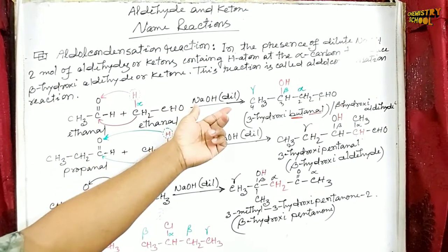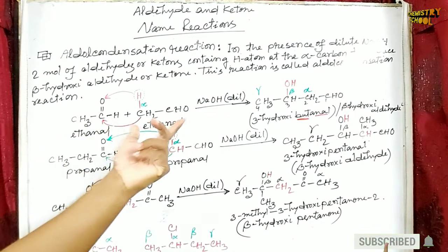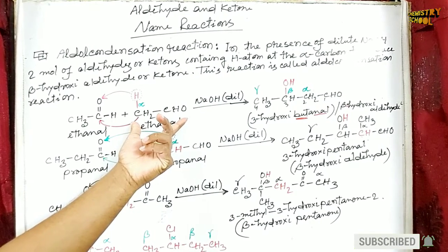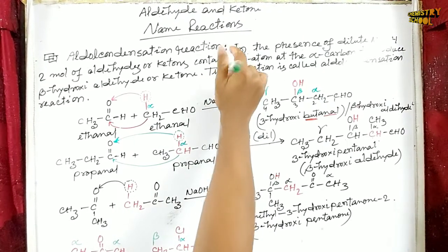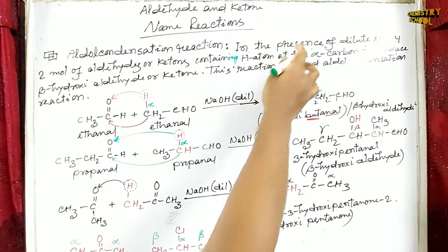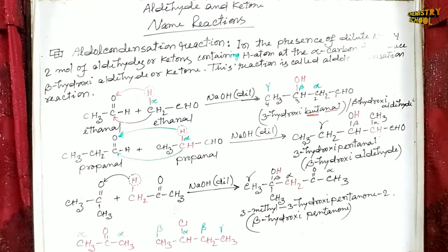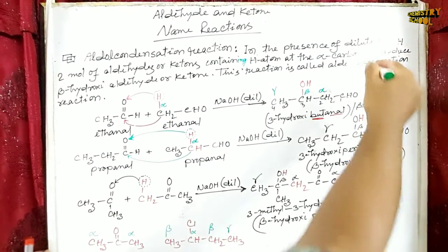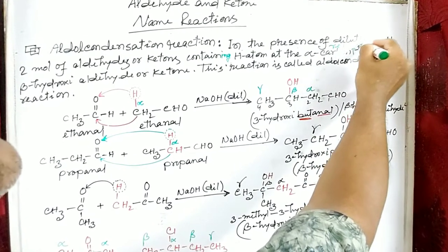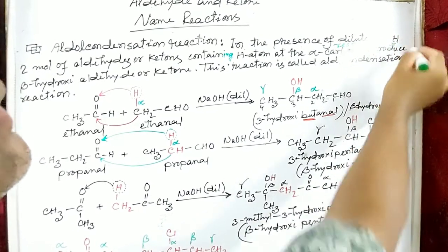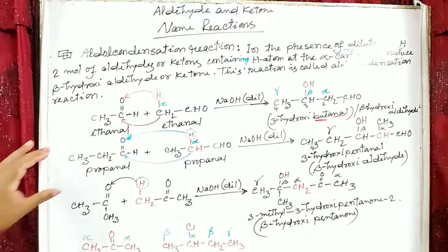In the presence of dilute base like sodium hydroxide, two moles of aldehyde or ketone containing a hydrogen atom at the alpha carbon react together to produce beta-hydroxy aldehyde or ketone. This reaction is called aldol condensation reaction.